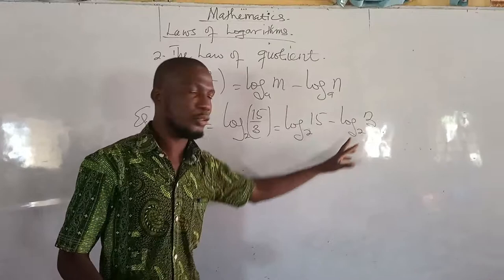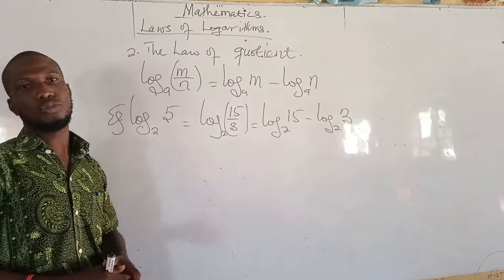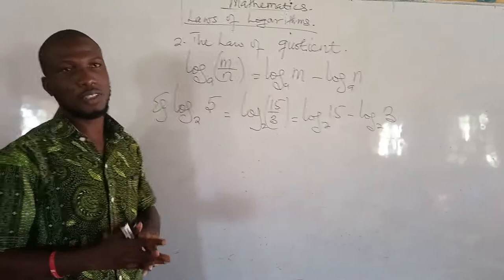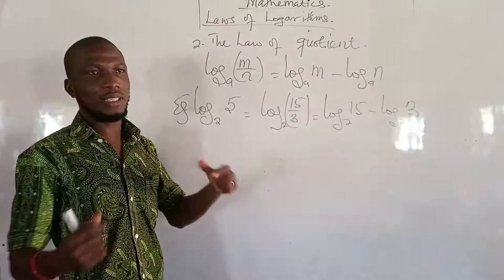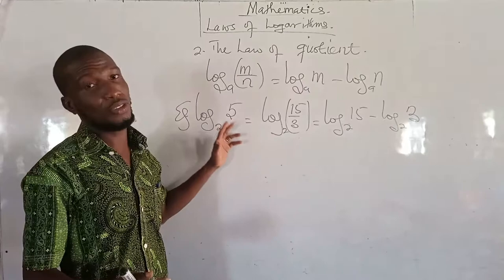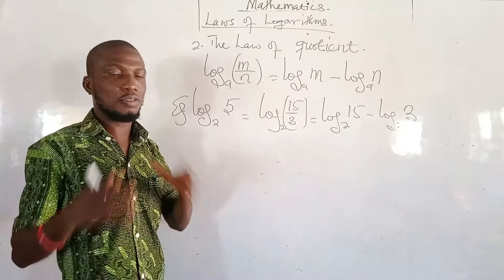You can try this for any division that gives you 5. For example, 50 divided by 10 is 5, so log 50 to a base minus log 10 to the same base will still give you the answer for log 5. The only requirement is that the division should give you 5 at the end of the day.